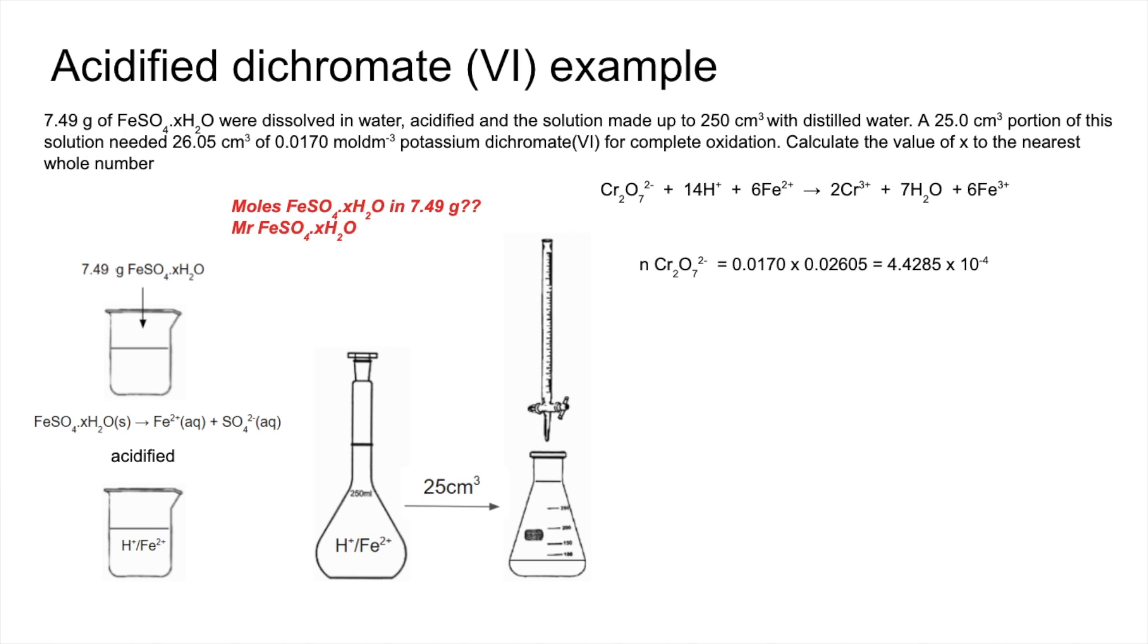So the moles of dichromate(VI) used in the average titra: concentration times volume. Mole ratio now is 1 to 6, so we multiply the moles by 6 to get the Fe2+ in the 25 cm³. Multiply by 10 to scale it up to what was in the 250 cm³.